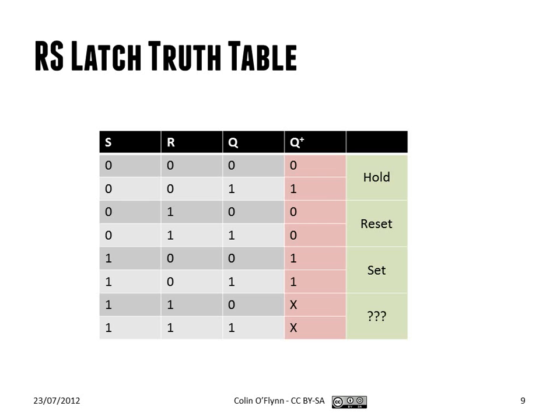So if you go through the whole table, what you'll find is that the S input we call the set input. So when it's one, regardless of what the previous state was, the output always goes to one. Likewise, R is the reset input, so regardless of the previous state, the output always goes to zero. Finally, if both of them are zero, we're in what we call the hold state. So the output is just the same as the previous state.